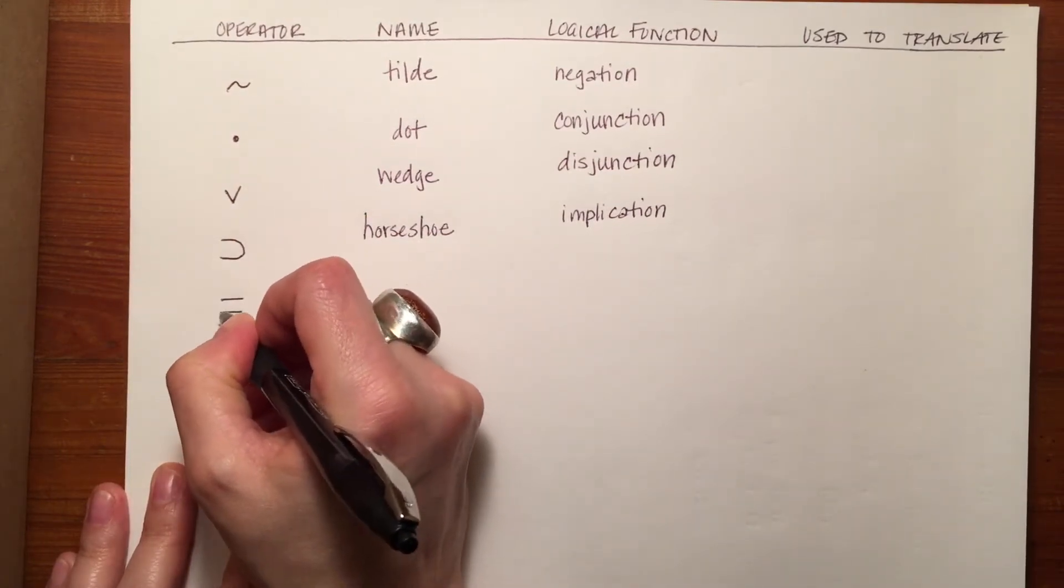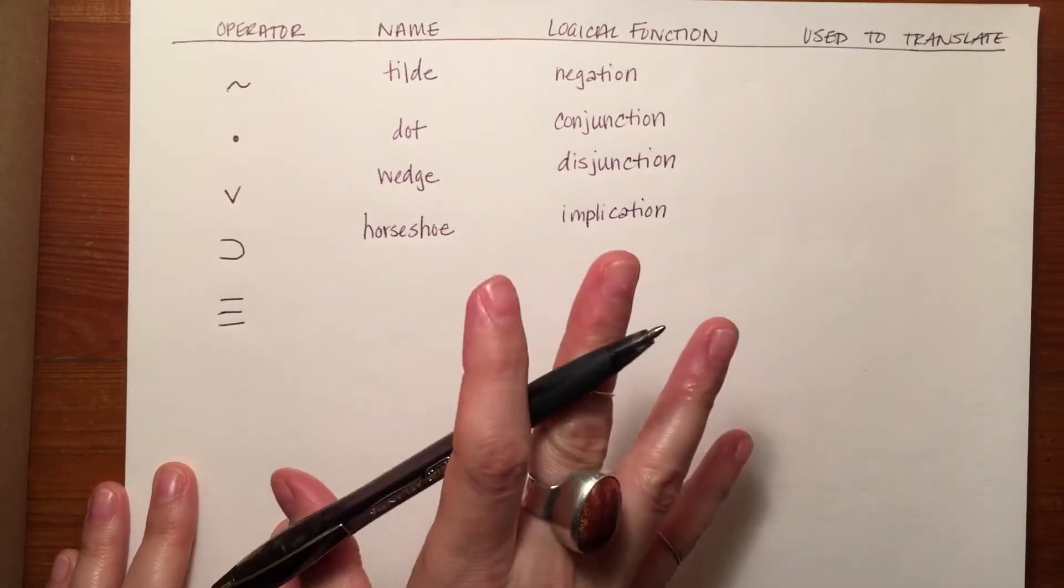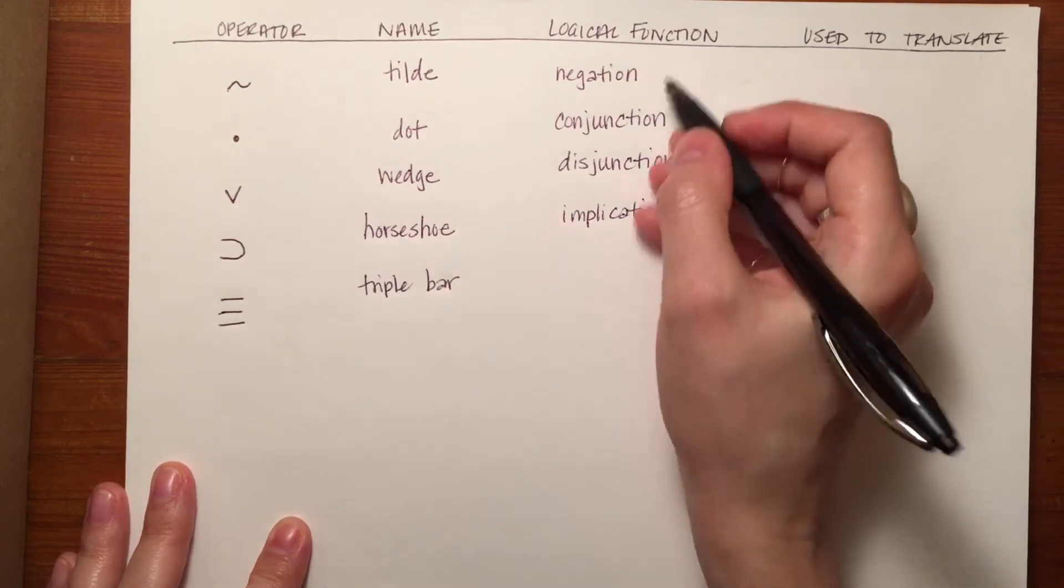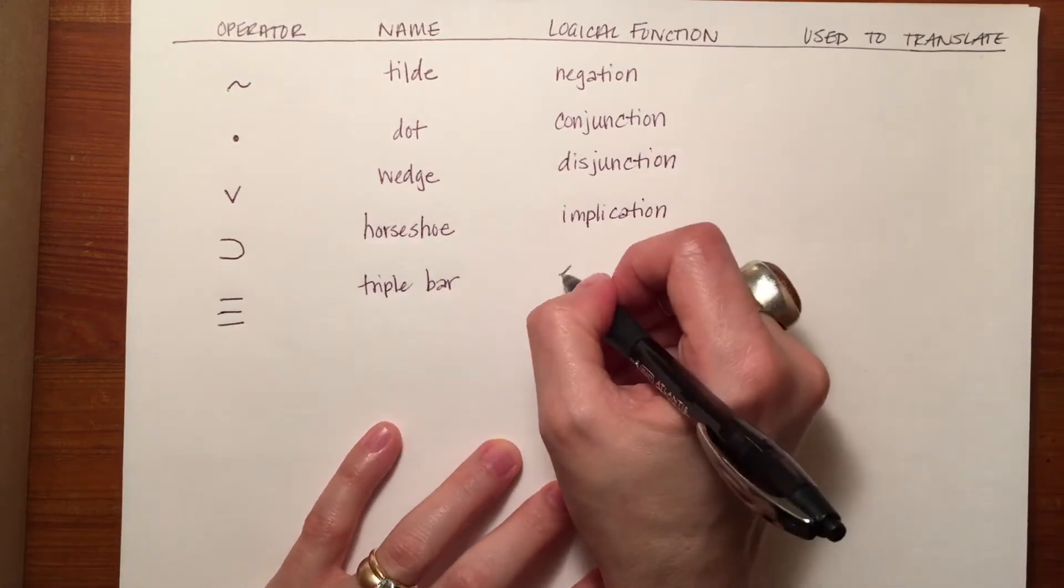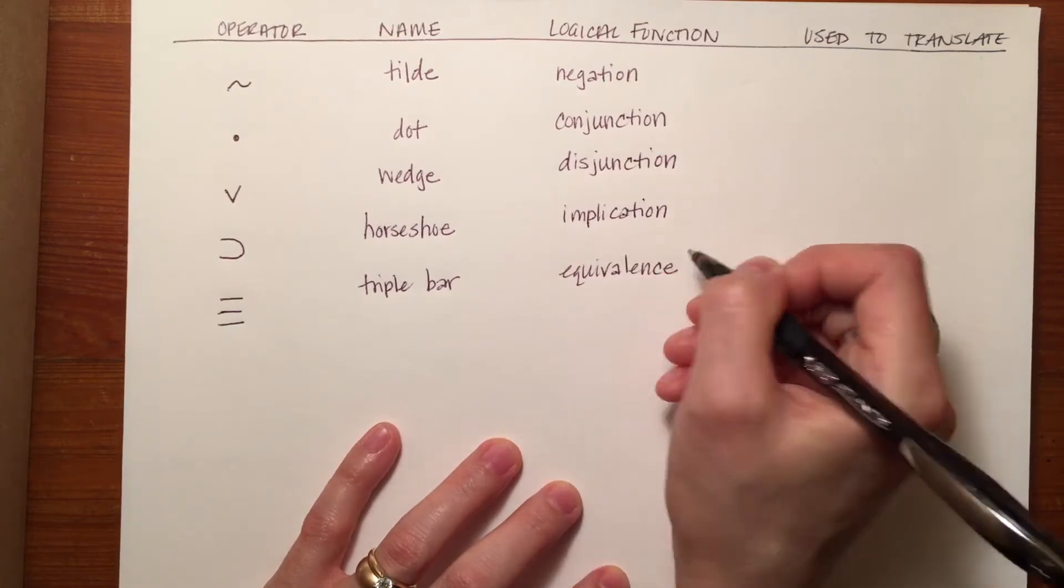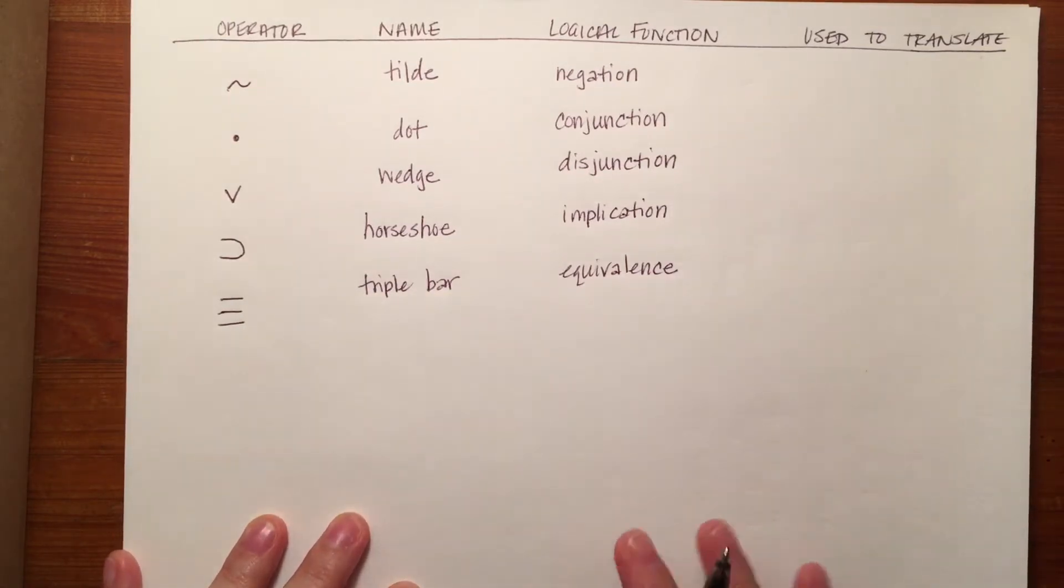Then the last one is, as you can see from the picture, it has a very unsurprising name. The triple bar. And its logical function is equivalence. And what's meant by that is making things equal. So you can think of it as a super equal sign.